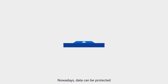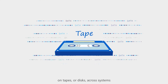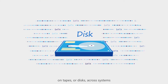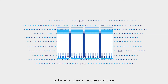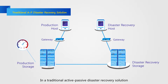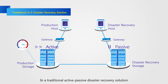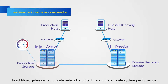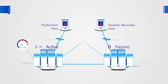Nowadays, data can be protected on tapes, or disks, across systems, or by using disaster recovery solutions. In a traditional active-passive disaster recovery solution, the load between two data centers is not balanced. In addition, gateways complicate network architecture and deteriorate system performance.